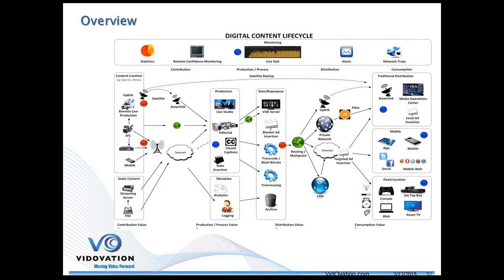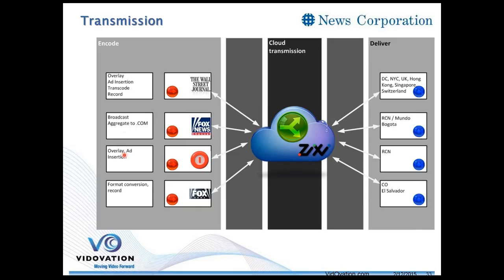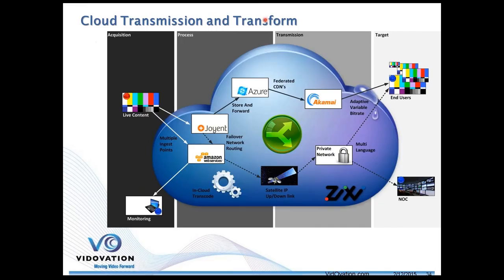Your workflow from contribution, production, post-production, distribution, and consumption could be quite different, and the flexibility of Zixi is ideal for customizing this for your specific application. News Corp's collaboration between the Wall Street Journal and Fox News Channel is one example — Zixi gave them the ability to aggregate, do logo overlays, and rebrand content depending on where it was being delivered, reaching DC, UK, Hong Kong, Singapore, and Switzerland reliably.